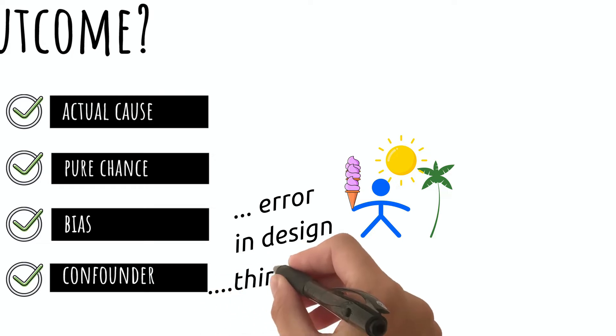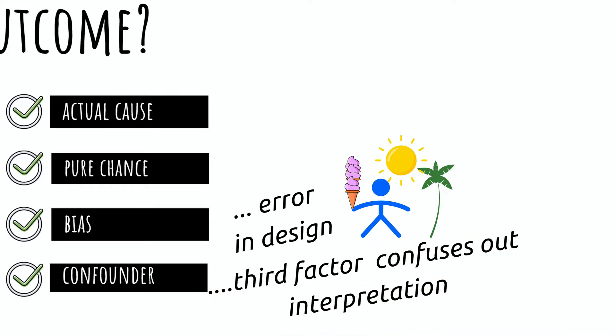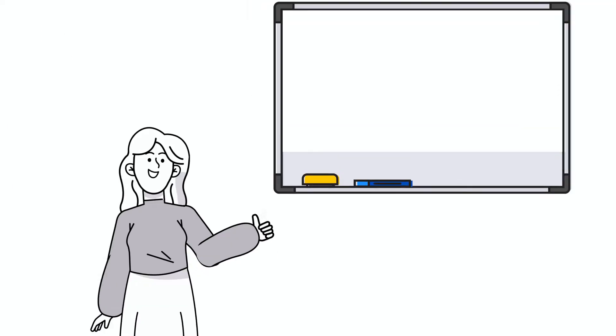On the other hand, confounding is where other factors confuse our interpretation of exposure and outcome.